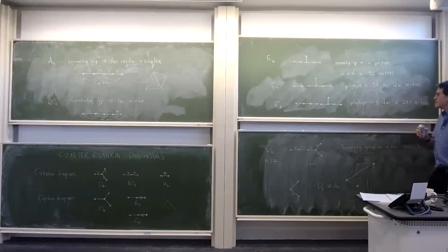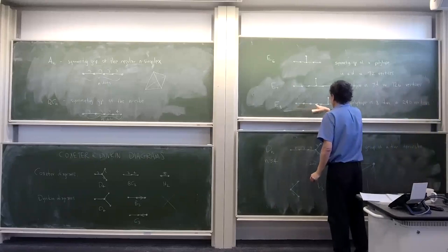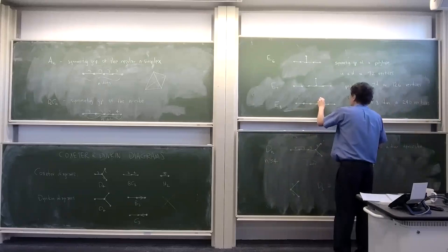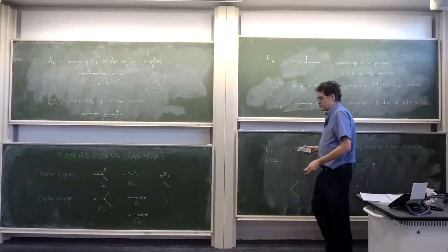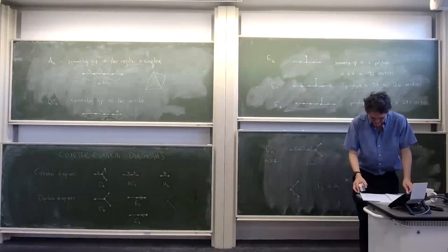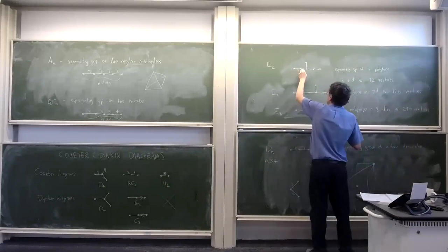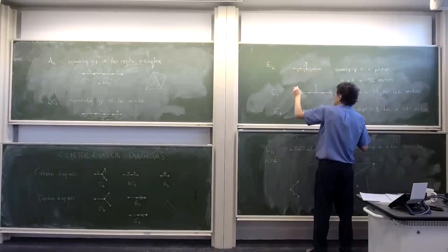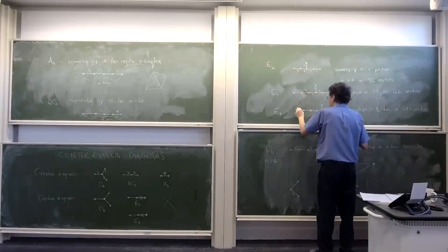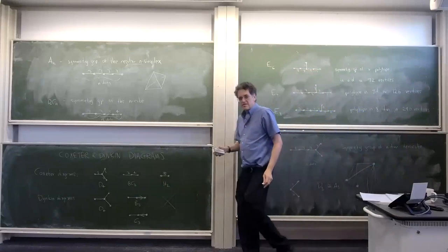E_8 is really the king of finite reflection groups. It has eight dots with the same branching pattern, all edges labeled three. It's the symmetry group of a polytope in eight dimensions with 240 vertices. It's quite common to leave out the threes on these diagrams — you can see why — and I'll leave them out when I get to the Dynkin diagrams.